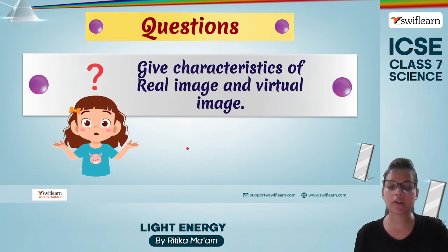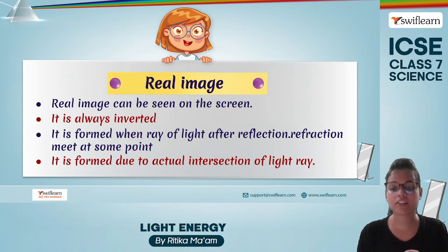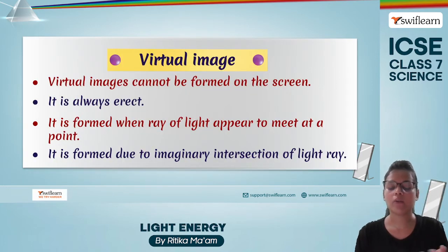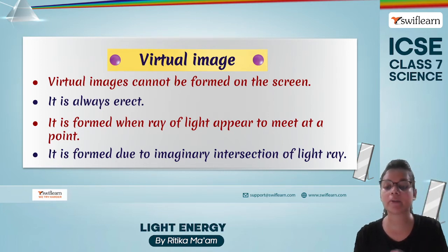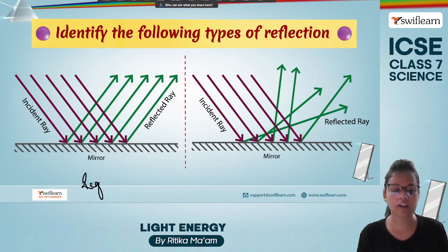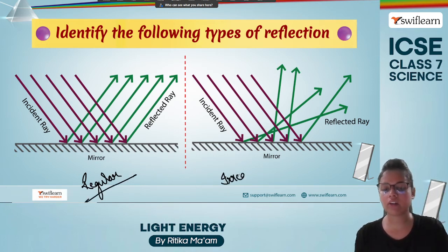Let's look at some review questions. Characteristics of a real image: it can be seen on a screen, it is always inverted, and it is formed when light rays after reflection or refraction actually intersect at a point. Characteristics of a virtual image: it cannot be formed on a screen, it is always erect, the light rays appear to meet but do not actually meet, and it is formed due to imaginary intersection of light rays. In the figure, regular reflection is shown where the patterns are very particular and proper, and the other is irregular reflection.